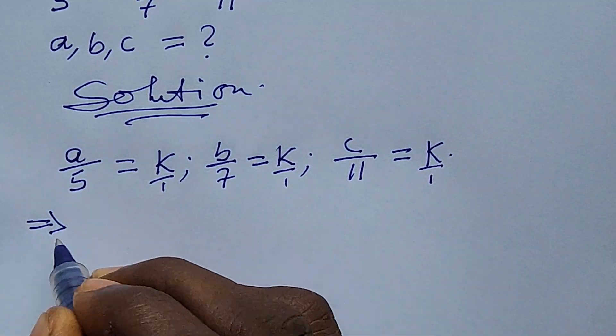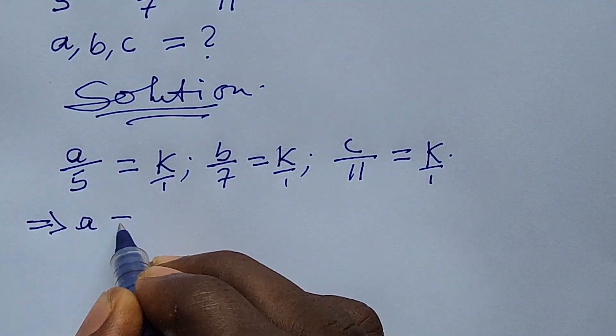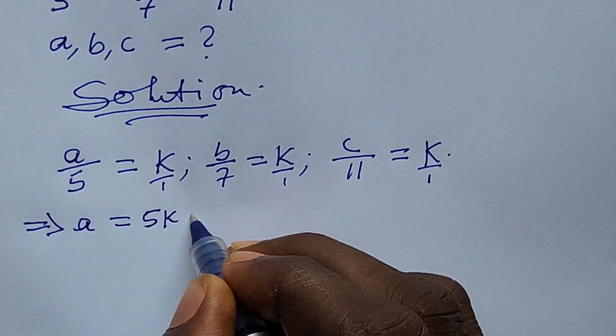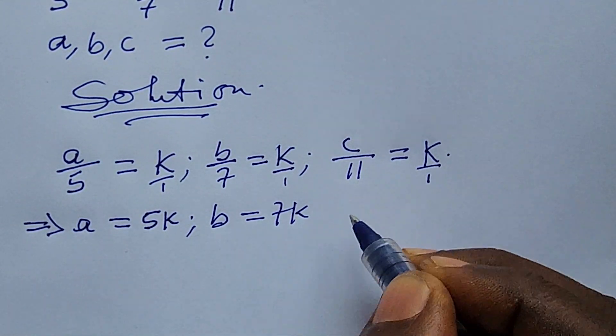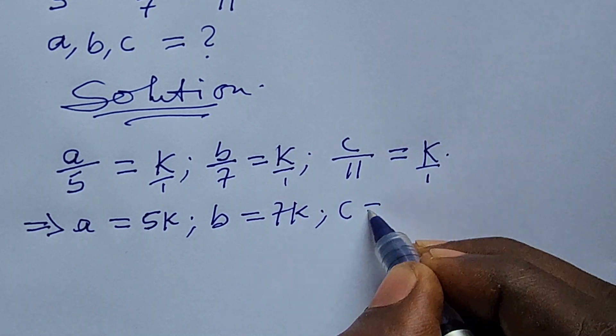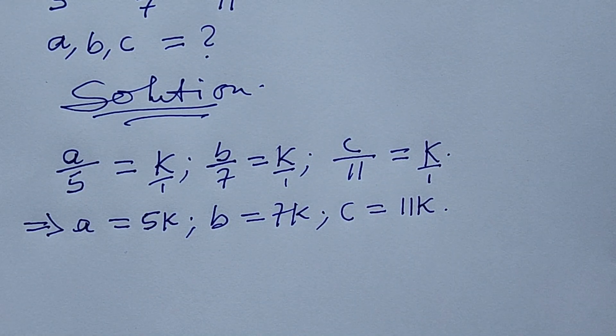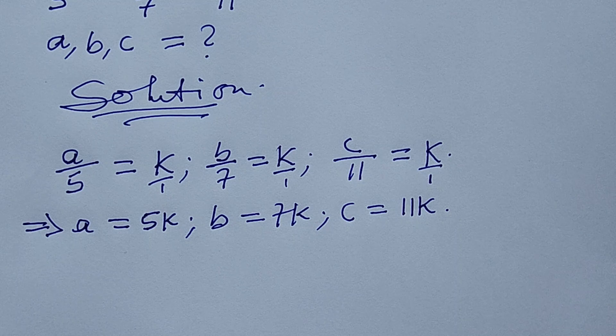From here it also implies that our a is equal to 5k, and b is equal to 7k, and c is equal to 11k.